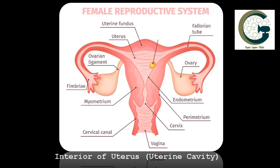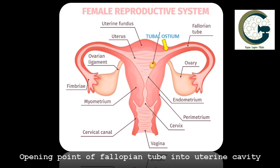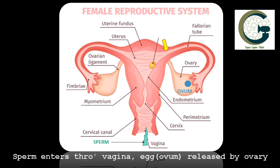On the two sides of the uterus are the two openings of the fallopian tubes, also called as the tubal ostia. There is a tubal ostium on the right side and a tubal ostium on the left side.